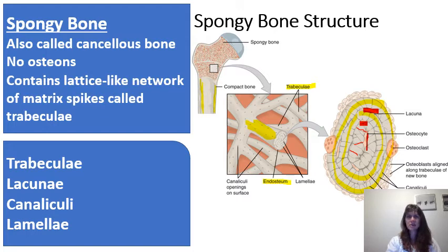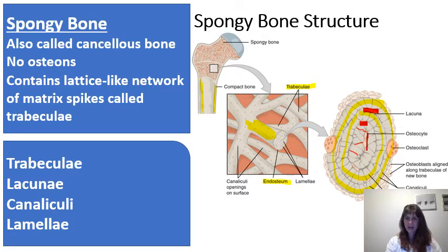Spongy bone is found in the ends of long bones as well as in between compact bone in flat bones.